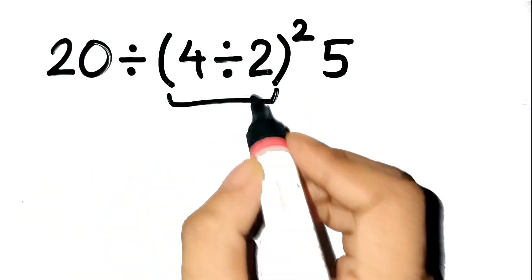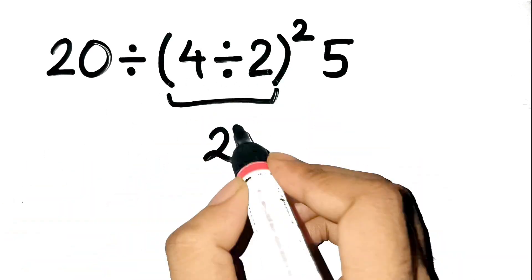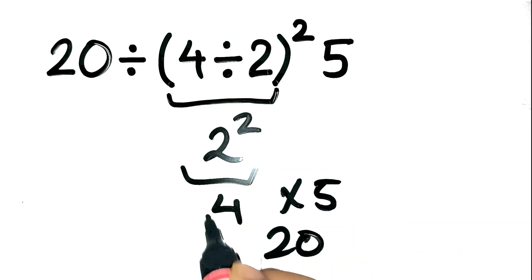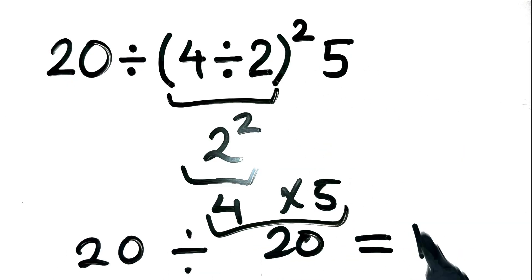4 divided by 2 is 2, then 2 squared is 4, and then 4 times 5 is 20, so 20 divided by 20 equals 1.